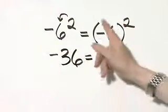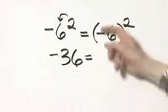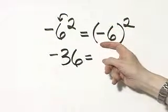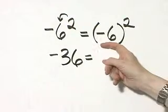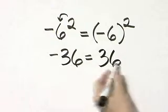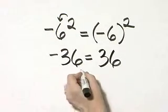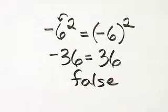On the right side, because of the parentheses, the base for this exponent of 2 is the entire negative 6. So on the right side, it's negative 6 times negative 6, which is a positive 36. These two numbers are not equal, so the statement is a false statement.